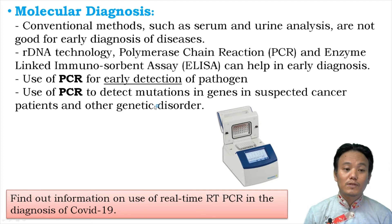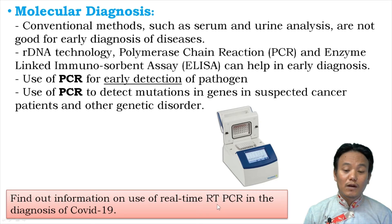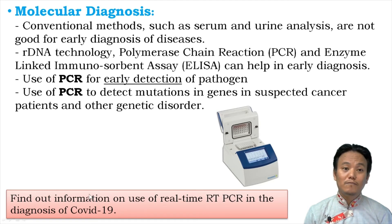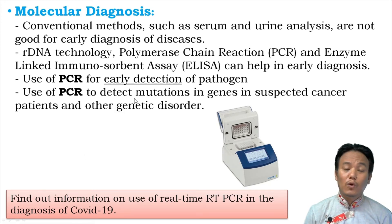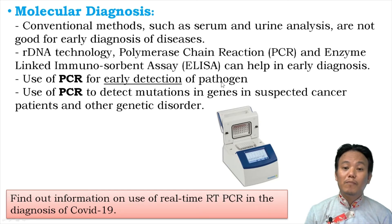By using PCR we can amplify the genetic material of bacteria or viruses, detecting their presence at lowest concentration, enabling early treatment. You can research the use of real-time RT-PCR in diagnosis of COVID-19 coronavirus, compared to rapid antigen testing. PCR is also used to detect mutations in genes in suspected cancer patients and for detection of other genetic disorders, making it a useful tool in molecular diagnosis.